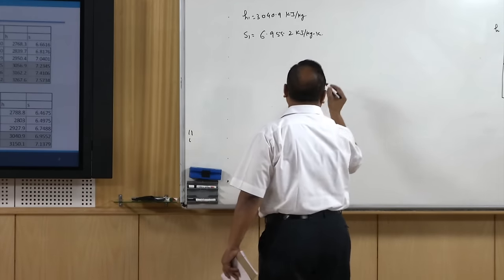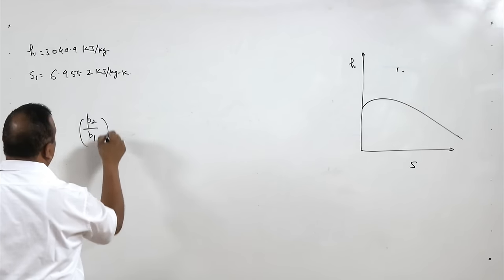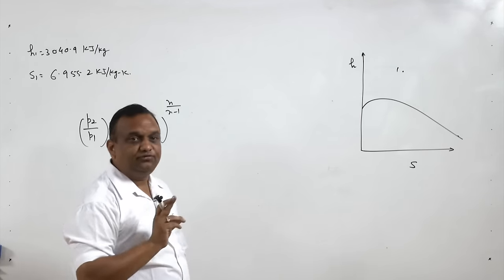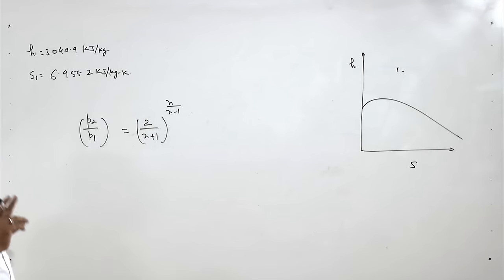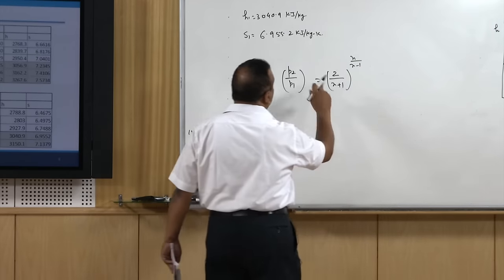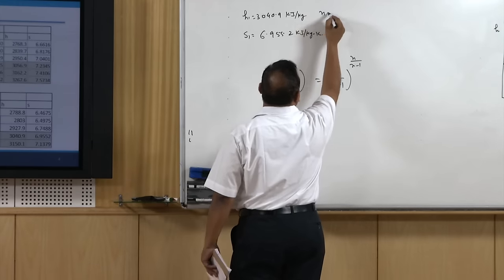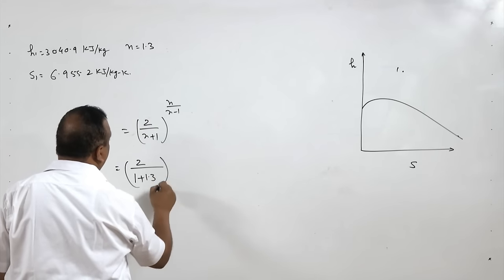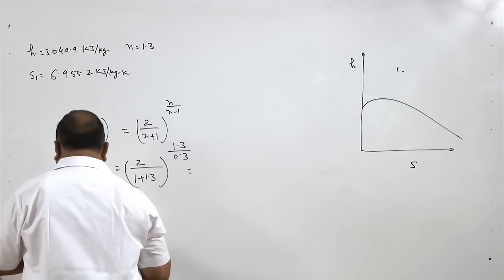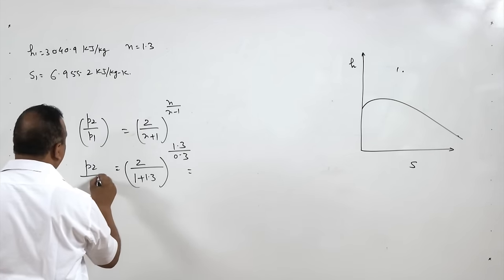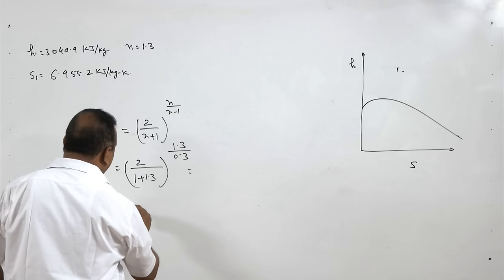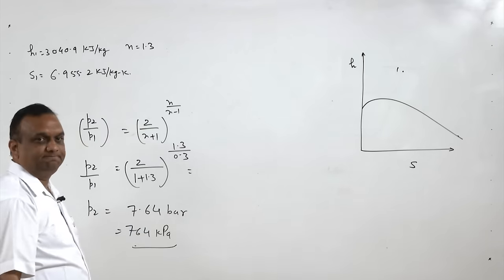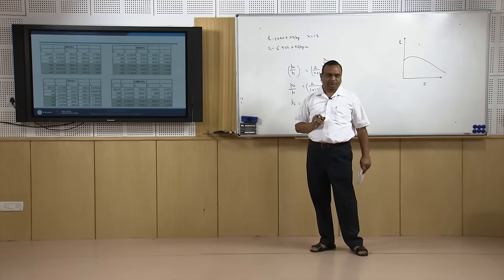The critical pressure ratio P2/P1 equals (2/(n+1))^(n/(n-1)). This gives the pressure at the throat, not the exit. For superheated vapor, n = 1.3. Putting in the value n = 1.3, we get P2 as 7.64 bar or 764 kilo Pascal — that is the pressure at the throat.